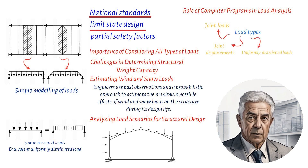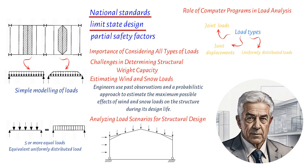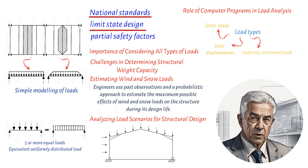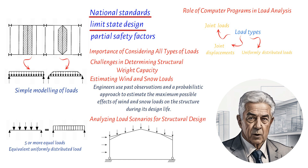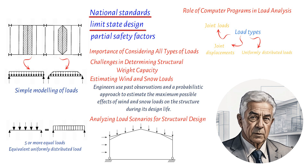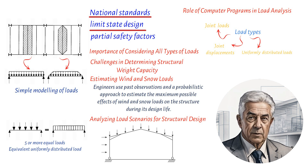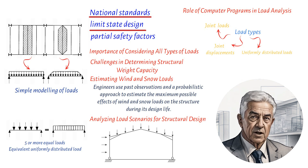Evenly distributed loads along parts of the structure is another way to add loads, used to simulate the weight of something like a uniform roof load or snow load across a section of the structure. However, there are situations where distributed loads may not be appropriate. For example, truss models may not allow for distributed loads because the load is instead applied to specific points.